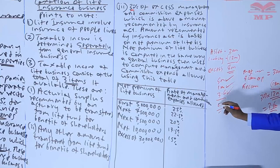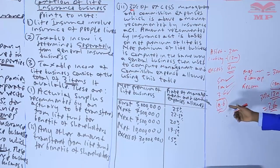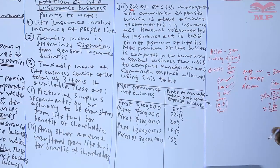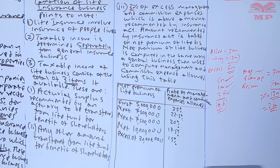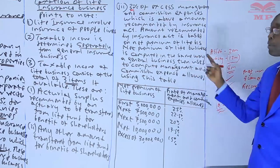You add the three items to get the total taxable income. If you don't have a general business, you tax it at 30 percent — the corporation tax rate. The key issue is how to get the recommended amount, which is based on the net premium of life business and the tiered table.